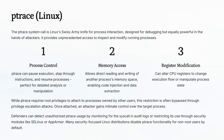On Linux, attackers love the ptrace system call. Originally designed for debugging, it lets them inspect, modify, and control other processes. With ptrace, they can read memory, change registers, and even hijack execution. Defenders use security modules like SELinux to limit ptrace and stop attackers in their tracks.